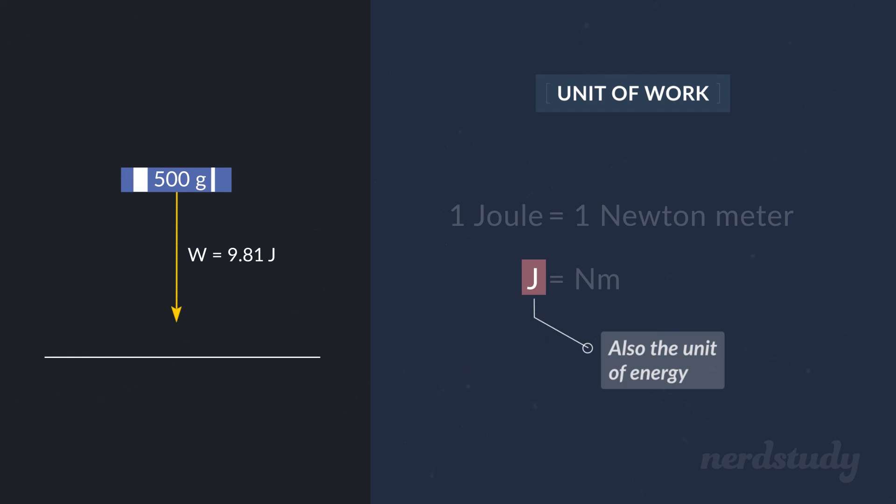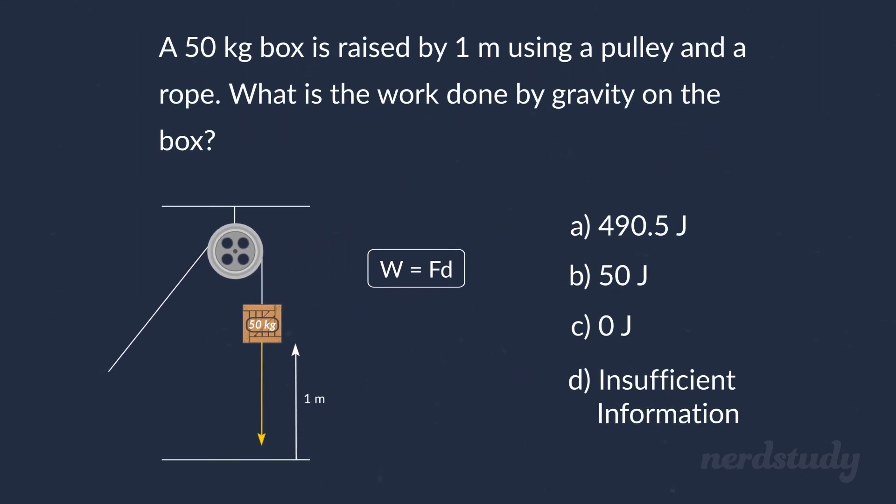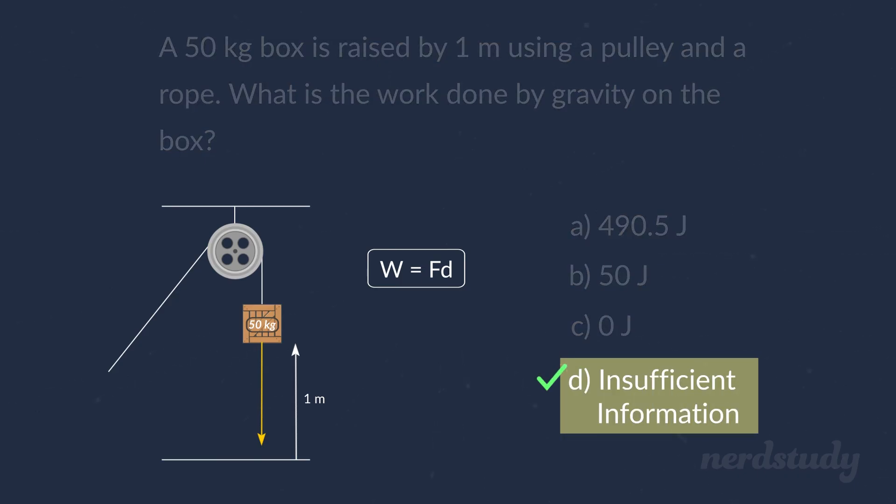Excellent! Now, before we end this lesson, let's look at one more example. Here's a 50 kilogram box attached to a rope. The rope passes over a pulley. Someone pulls on the rope, and the box is raised by 1 meter. Clearly, gravity is acting on the box, so we want to calculate the work done by gravity on the box. Here's the formula for work, but remember that it only applies if the force is constant and points in the same direction as the displacement. Hmm, how would we solve this problem?